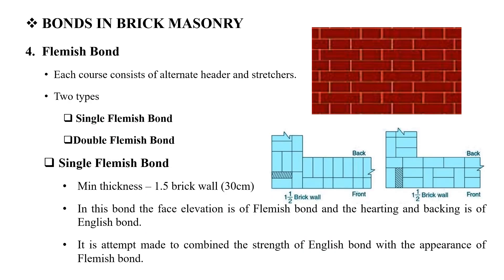The Flemish bond: each course consists of alternate headers and stretchers. In any single course, we alternate headers and stretchers. The minimum thickness of a single Flemish bond wall is 1.5 brick wall, which is 30 cm.